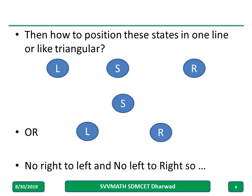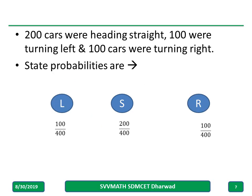To construct the model, note there is no right-to-left or left-to-right transition, so the arrangement is flexible. The state probabilities are: 200 out of 400 heading straight gives probability 1/2 for S; 100 out of 400 turning left gives 1/4 for L; and 100 out of 400 turning right gives 1/4 for R.